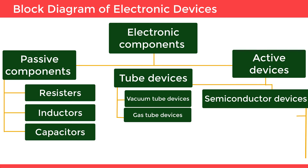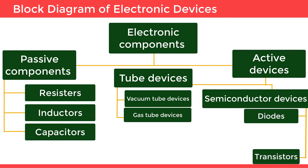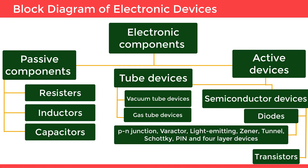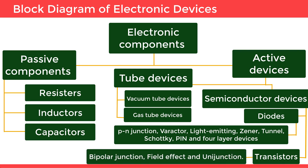Semiconductor devices include diodes and transistors. Diodes include PN junction, varactor, light emitting, Zener, tunnel, Schottky, PIN, and four-layer devices. Transistors include bipolar junction, field effect, and unijunction types.